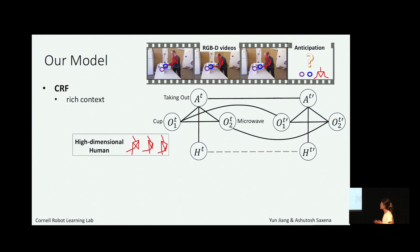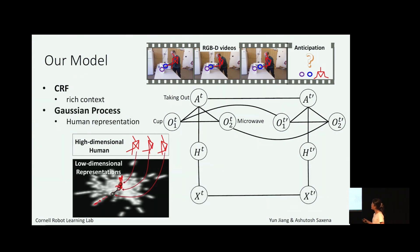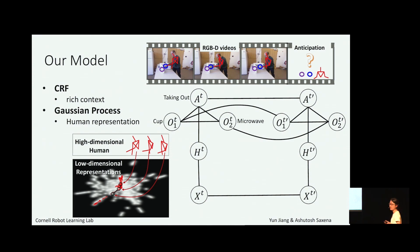We propose to integrate a Gaussian process into our model that learns a mapping from the original high-dimensional space H to a latent low-dimensional space X. In this low-dimensional space, we can easily model human-human relations and use them to infer future human state X_T' as well as to generate realistic human motions H_T'.